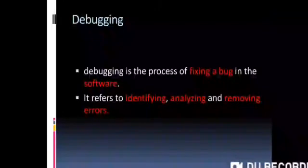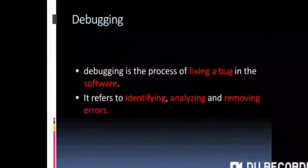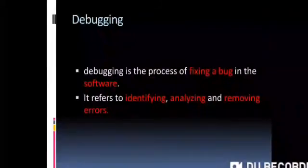Debugging is the process of fixing bugs in the software. It refers to identifying, analyzing, and removing errors from the code.